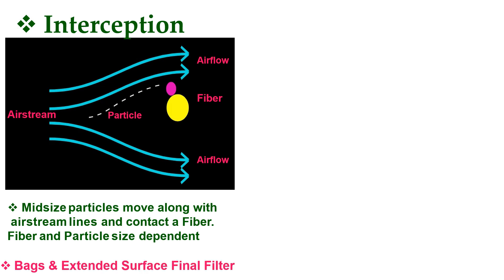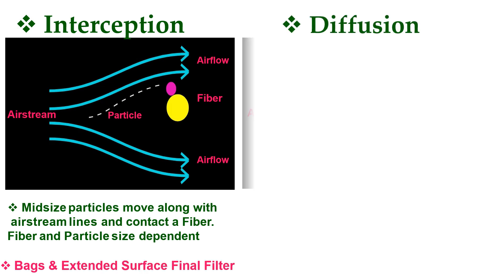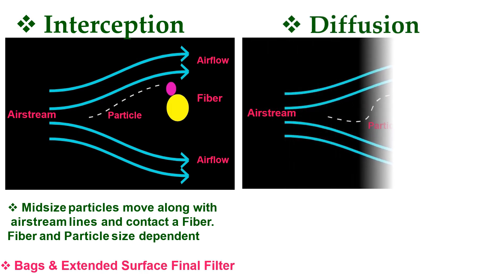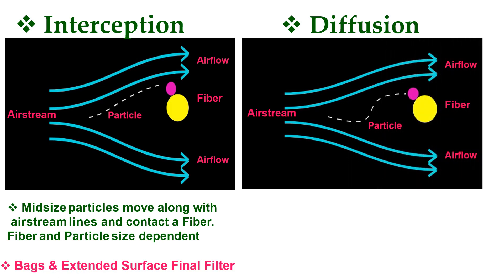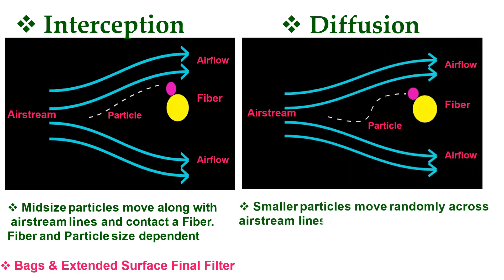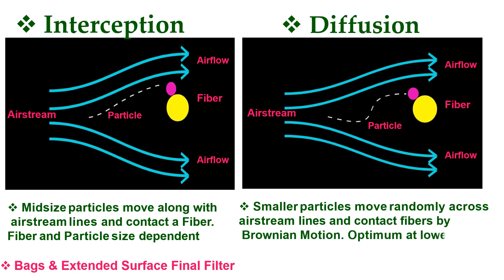The fourth method is diffusion filtration. Smaller particles move randomly across airstream lines and contact fibers by Brownian motion. This method is optimum at lower airflow. An example of a diffusion filtration method filter is the HEPA filter.